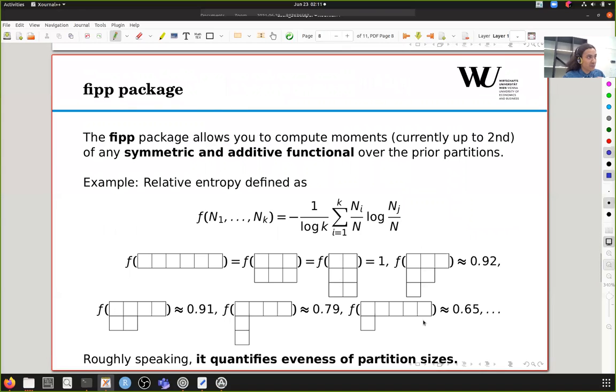This is where the FIP package comes in handy, because we take an alternative approach. What we do is consider computing a symmetric and additive functional over all possible prior partitions. One functional we find particularly useful is called relative entropy, and it basically quantifies evenness of partition sizes. Partitions that are kind of even will get a value one, which is the maximum. Partitions that are uneven will get values that are close to zero, like this and this.